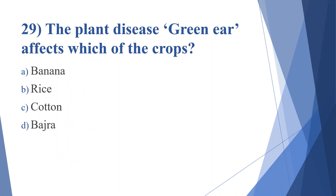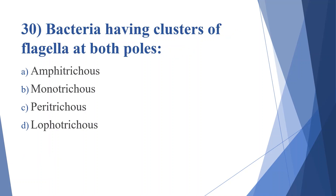Twenty-ninth question: the plant disease green ear affects which of the crops? Option A: banana. Option B: rice. Option C: cotton. Option D: bajra. Answer is option D, bajra.